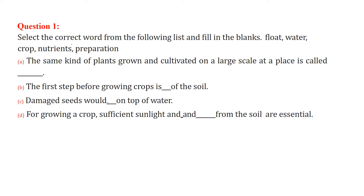First: select the correct word from the following list and fill in the blanks. The same kind of plant grown and cultivated on a large scale at a place is called crop. The first step before growing crops is preparation of the soil.